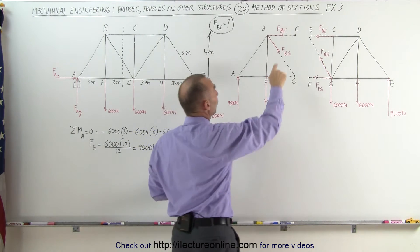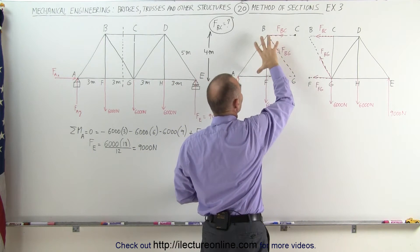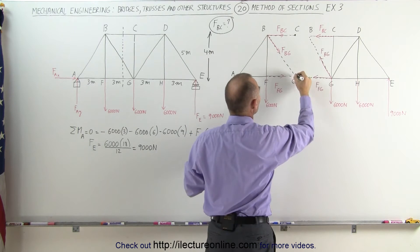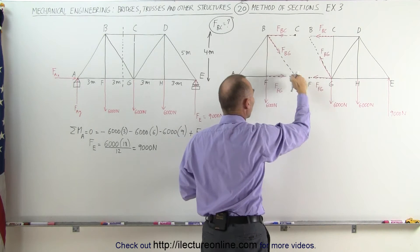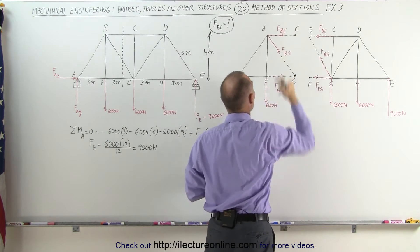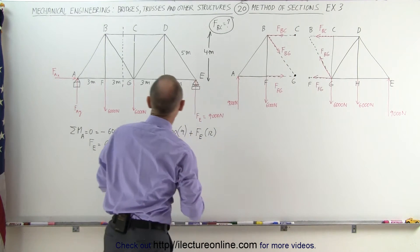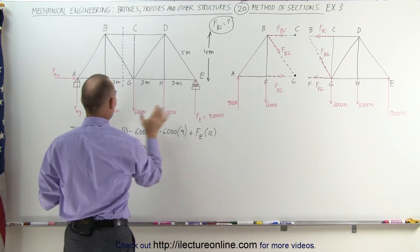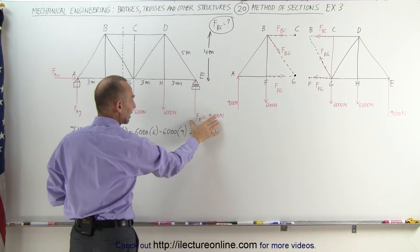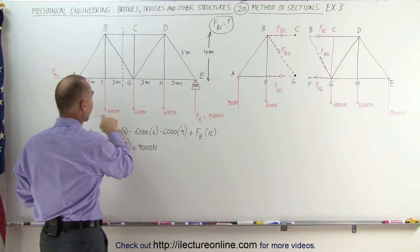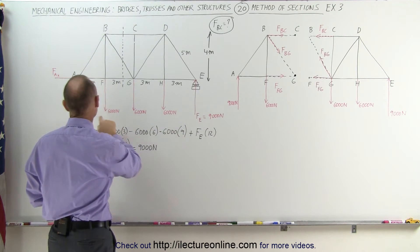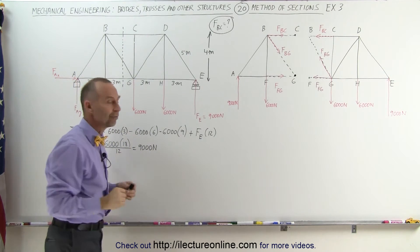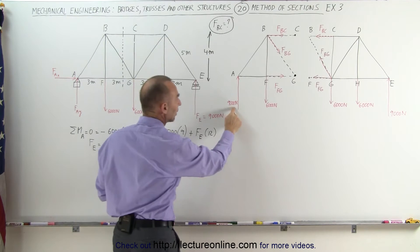Now to find the force FBC on this section of the bridge, we're going to put our pivot point on G. The reason why we do that is we eliminate both this unknown and this unknown force, only leaving one unknown force. Also notice that the supporting ends of the bridge each have to carry a force of 9,000 Newtons. We calculated this to be 9,000 on the previous videos. And then since there's a total load of 18,000 Newtons, this side, in perfect symmetry, should also be bearing a force of 9,000 Newtons, which is indicated right there.